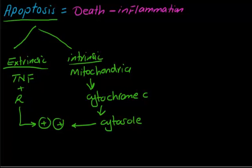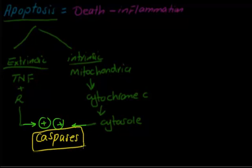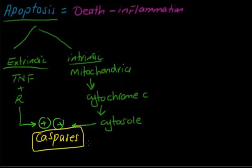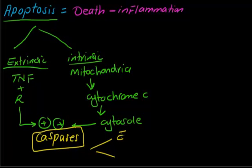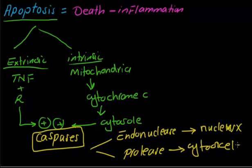This will lead to the activation of an enzyme. The enzyme that activates in the case of apoptosis is caspases — the main enzyme responsible for apoptosis in the cell. There are two kinds of caspases: endonuclease, which goes to the nucleus and hits the nucleus, and protease, which goes to the cytoskeletal system of the cell and hits it.